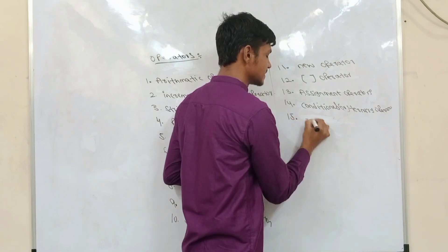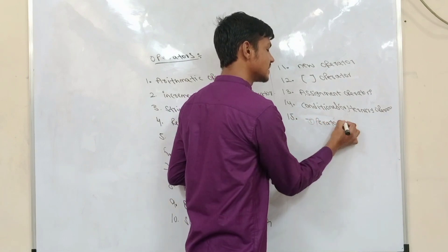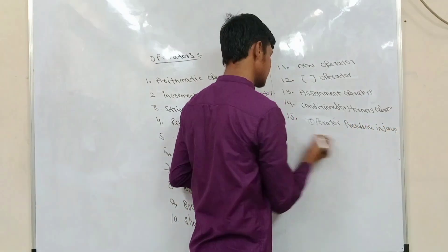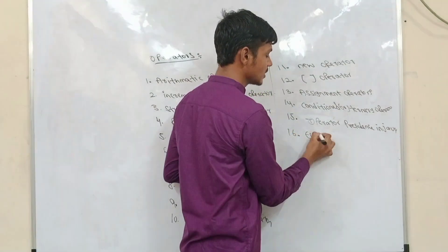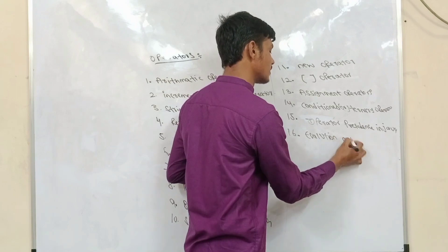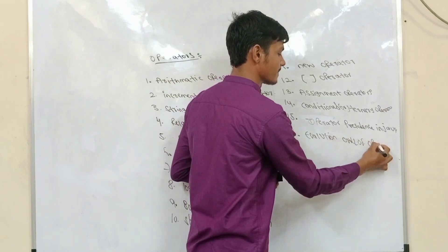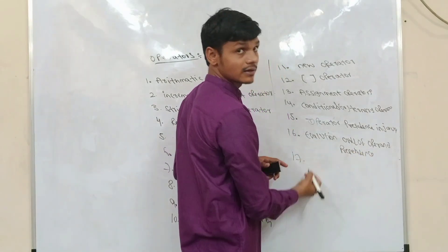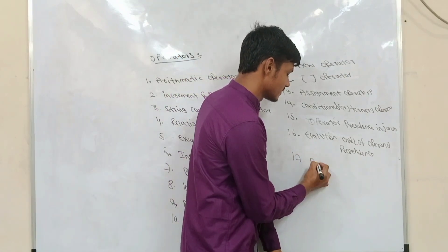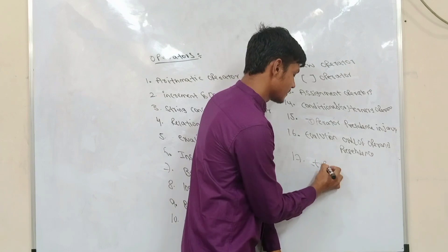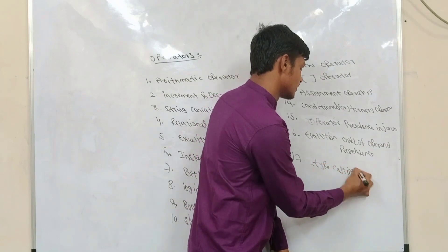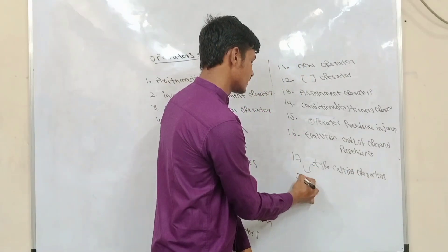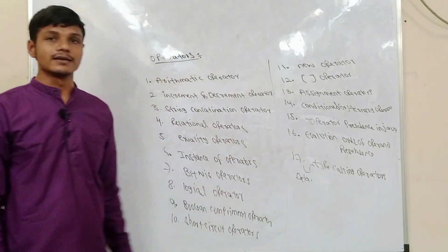The fifteenth one is operator precedence in Java. The sixteenth one is order of evaluation and order of operand precedence. The seventeenth and last one is data type casting operator. So these are the 17 operators supported in Java.